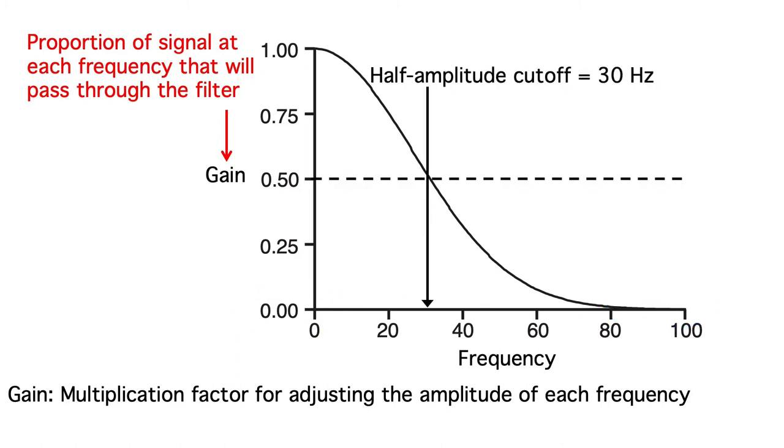Filters are often summarized by the frequency at which the signal is attenuated by 50%. This filter hits the 50% point at 30 Hz, so we'd say that it has a half amplitude cutoff at 30 Hz. We can also quantify the roll-off of the filter, which is how rapidly the filter drops off. We usually do this by giving the slope at the steepest part of the filter. This filter has a slope of 12 dB per octave. You may be wondering why the frequency response function drops off so slowly. As we'll discuss in a minute, a gradual roll-off like this is useful because it avoids time domain distortions that can happen with a sharp roll-off.